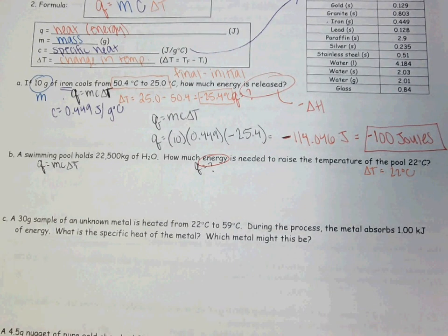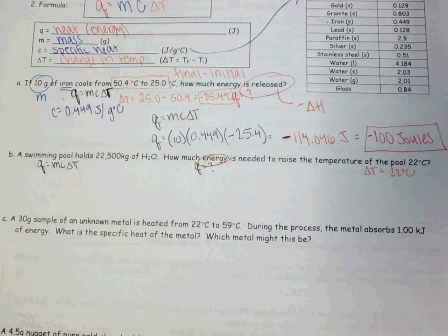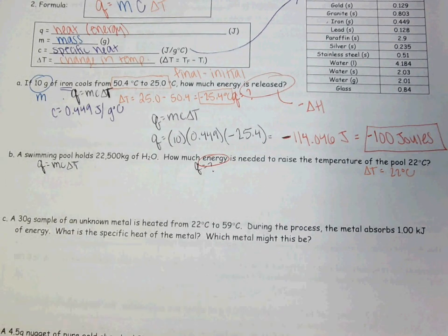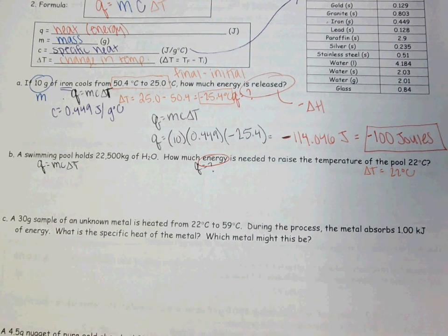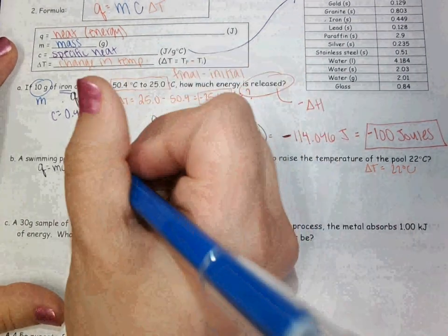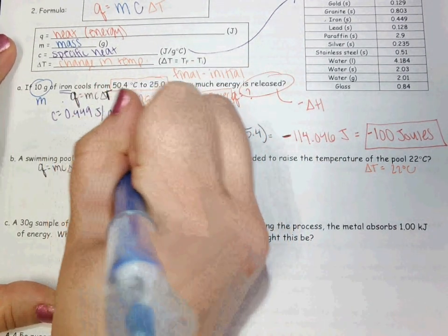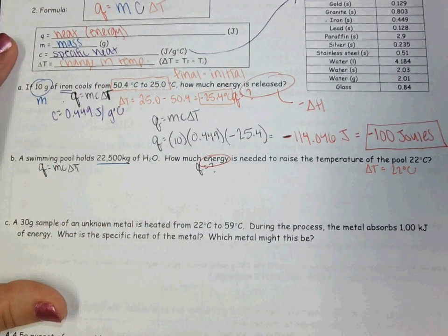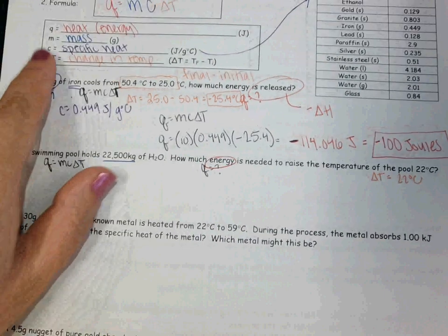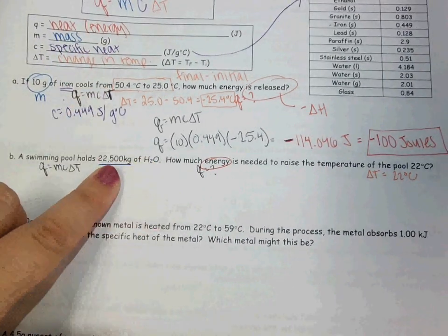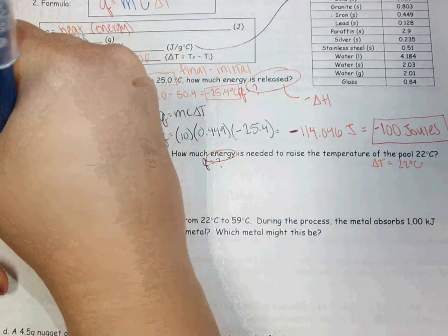If I said I wanted to cool it by 22 degrees Celsius, then my delta T would still be 22, but it would be negative. So you have to pay attention to what the wording of the question actually says. My mass is given to me as this number right here, but we need our mass to be in grams and it's given to me in kilograms. So you can convert that.